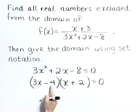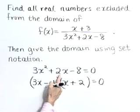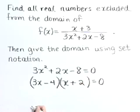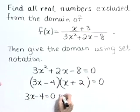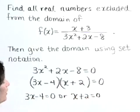Checking, negative 4x plus 6x gives that middle term of 2x. Now use your zero factor property: 3x minus 4 is equal to 0, or x plus 2 is equal to 0.